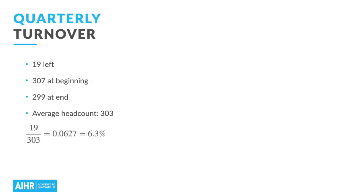Quarterly turnover works the exact same way, except we're now taking the number of people leaving during the whole quarter and dividing by the average number of people employed at the beginning and the end of the quarter. In this example, we want the turnover rate from the first quarter. Let's say there are 19 who left during the quarter. At the start of the quarter on January 1st, there were 307 employees. At the end of March, there were 299, for an average headcount of 303 over the whole quarter. Plugging this into our formula, we get a turnover rate of 6.3% for the first quarter.